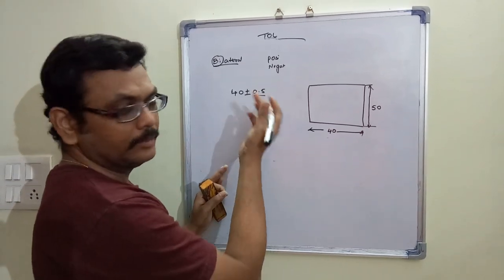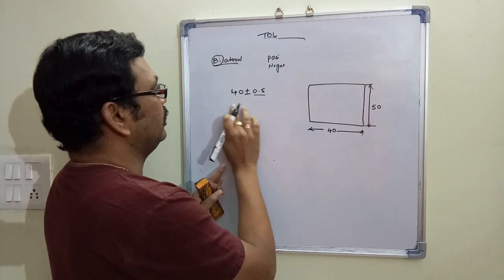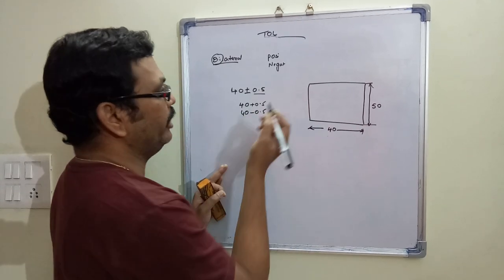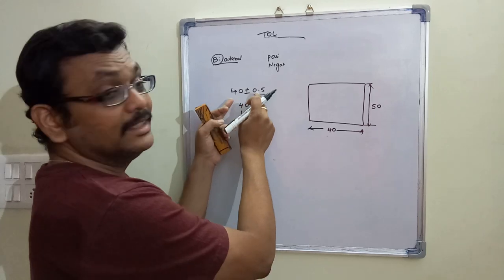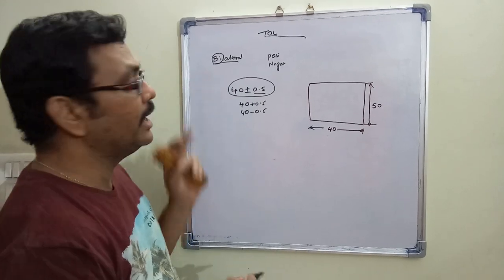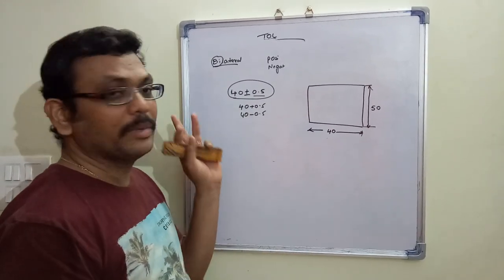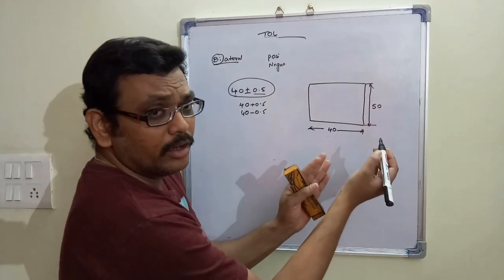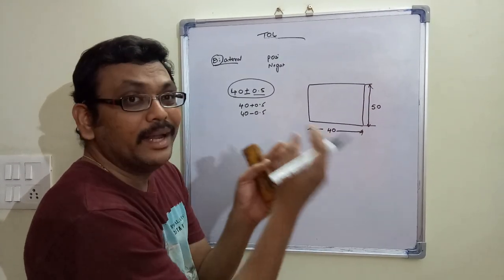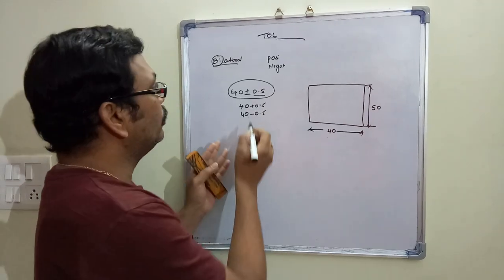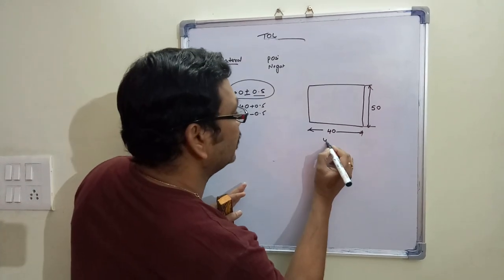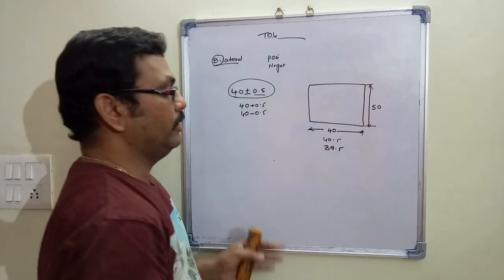In the bilateral case, the dimension can be both 40 +0.5 and 40 −0.5, because we haven't taken any zero on either side. This means the dimension can vary between 40.5 and 39.5. Based on the mating component or application, we decide whether to give bilateral or unilateral tolerance.